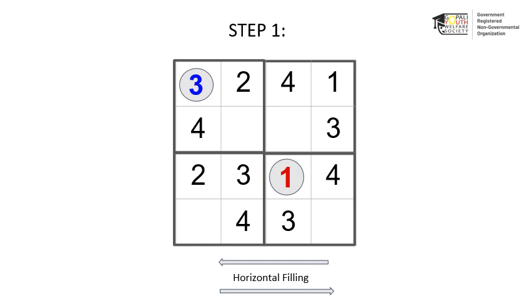In the first row, only the number 3 is missing and the first square is empty. So, fill the first box with the number 3. Moving to the next row, 2 squares are empty, so we skip filling this row for now and move to the third row.